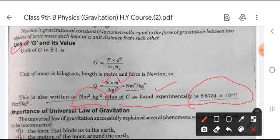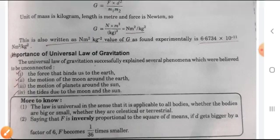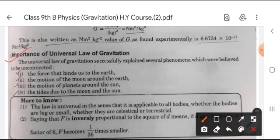Importance of universal law of gravitation: The universal law of gravitation successfully explained several phenomena which were believed to be unconnected. First is the force that binds us to the earth, the motion of the moon around the earth, the motion of planets around the sun, the tides due to the moon and the sun. As you know, in the ocean or coastal areas, sometimes the level of seas increases and sometimes it decreases. That is called tides, and this happens due to the gravitation law, where gravitational force occurs between moon and earth.